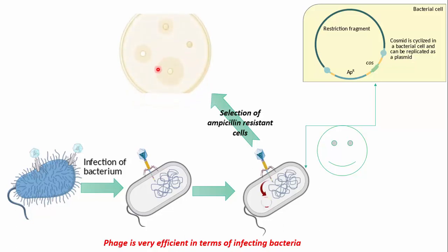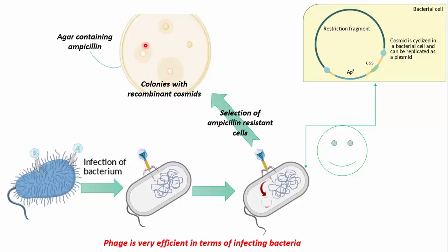We can easily distinguish the E. coli cells that received the cosmid by their ability to grow on media containing ampicillin. Here are colonies with recombinant cosmid, and they can be easily distinguished from bacterial cells that did not receive the cosmid vector. The phage is very efficient in terms of infecting bacterial cells.